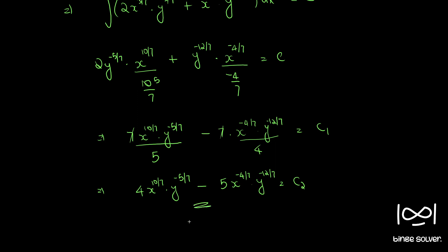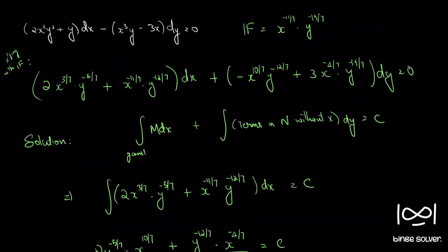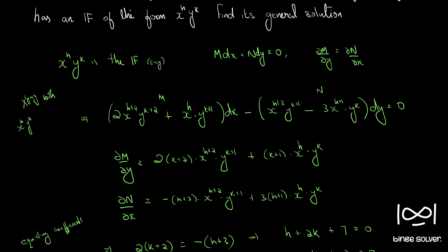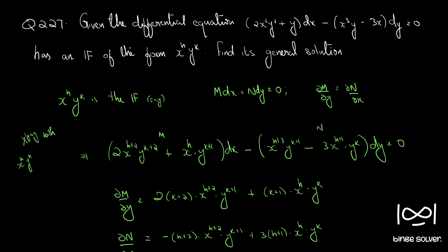So the final general solution is 4x^(10/7)·y^(−5/7) − 5x^(−4/7)·y^(−12/7) = C2. C1 and C2 are arbitrary constants related by scaling. These are the steps — we found the integrating factor using Rule 5. This is the solution to Question number 227.